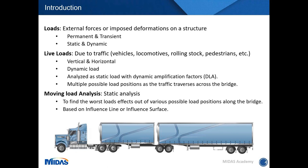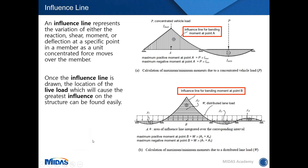Moving load analysis is typically a static analysis that finds the worst load effects out of various possible load positions along the bridge, based on the concept of influence lines or influence surfaces. An influence line represents the variation of reaction, shear, moment, or deflection at a specific point in a member as a unit concentrated force moves over that member.